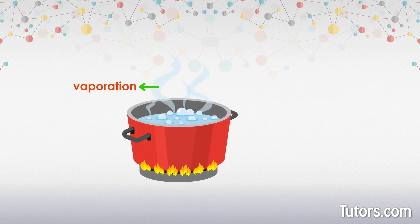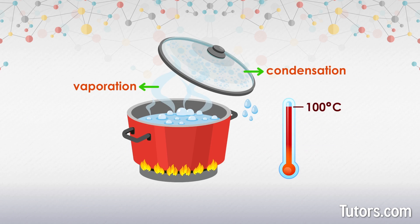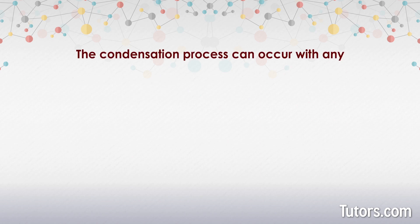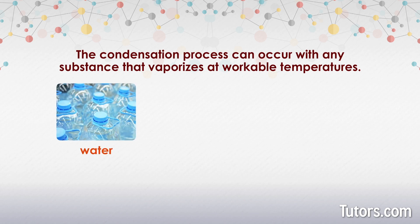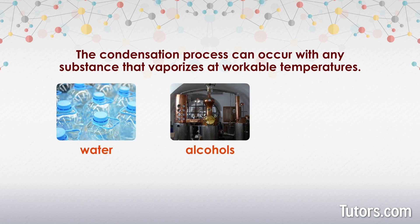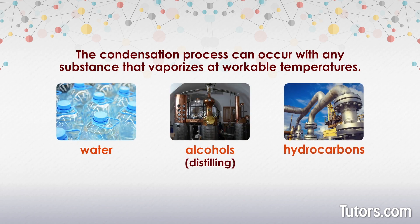Fresh water vaporizes and water vapor condenses at 100 degrees Celsius or 212 degrees Fahrenheit. The condensation process can occur with any substance that vaporizes at workable temperatures, such as water, alcohol used in distilling, and hydrocarbons used in petroleum refining.